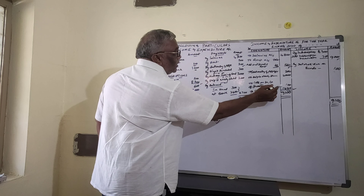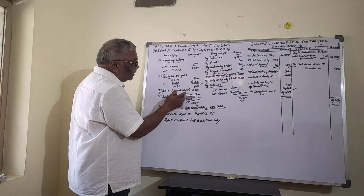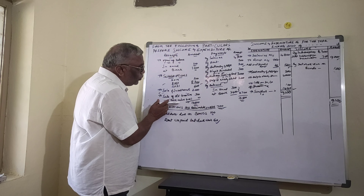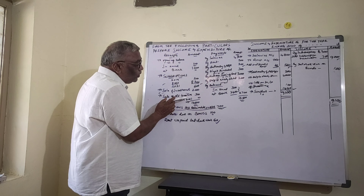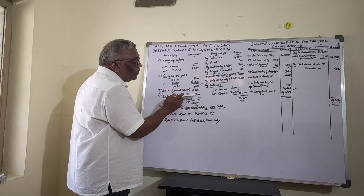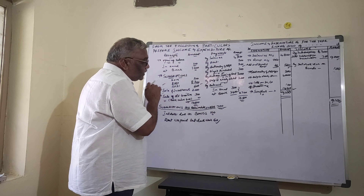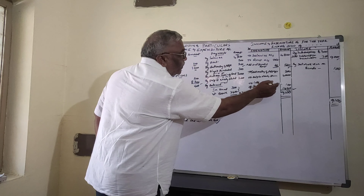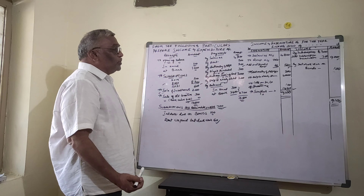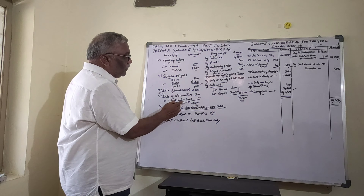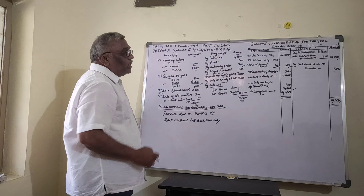The loss on sale of furniture is calculated as follows: sale of furniture was $300, and the book value of the furniture was $400. Since $400 worth of furniture was sold for only $300, the loss on sale of furniture is $100, which is the difference: 400 minus 300 equals one hundred.